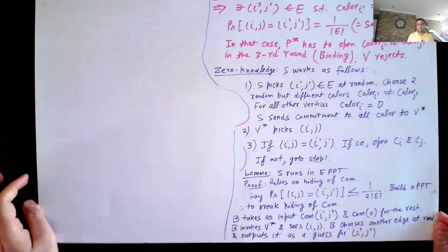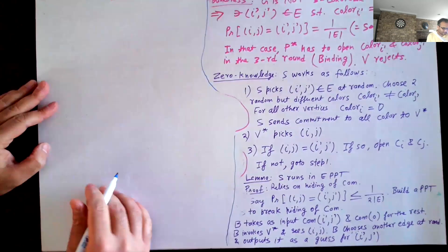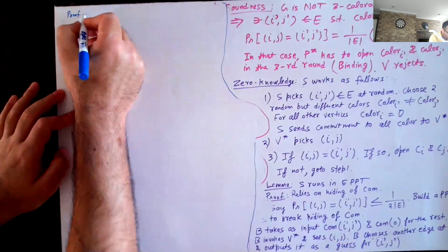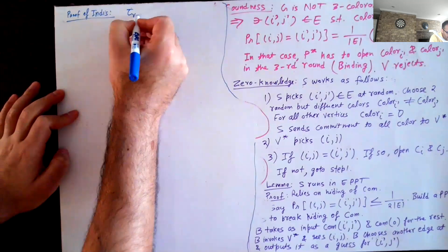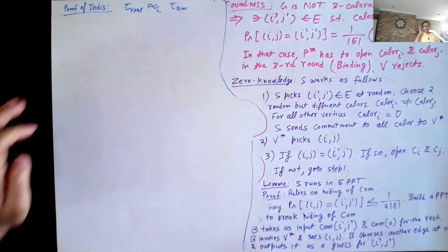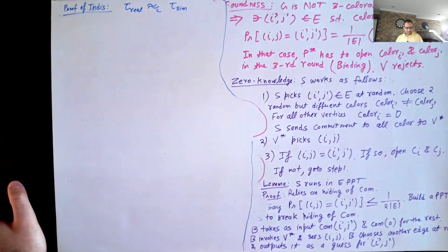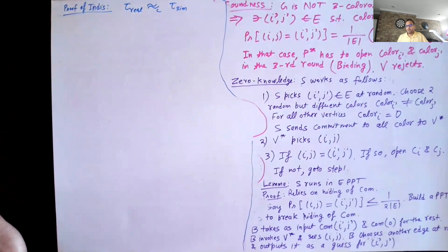Let's talk about the running time of the simulator and then prove that the transcript the simulator produces is indistinguishable from the real transcript. We need to prove that τ_real is computationally indistinguishable from τ_sim. In the zero-knowledge proof for graph isomorphism we didn't use any cryptography or computational assumptions — here we do, so computational indistinguishability comes into the picture. We prove this using a hybrid argument.